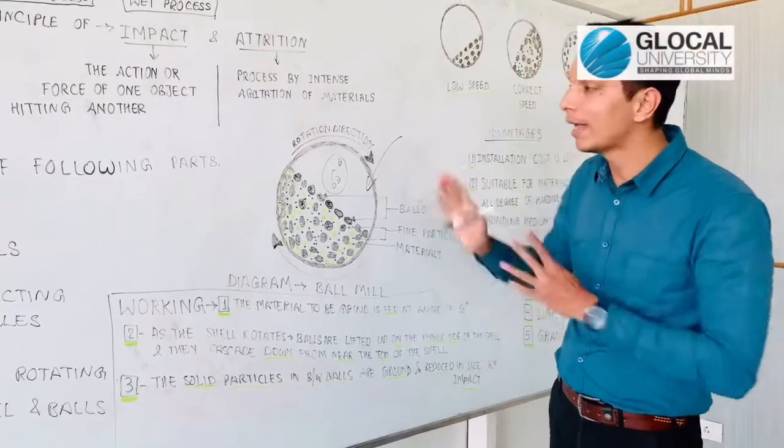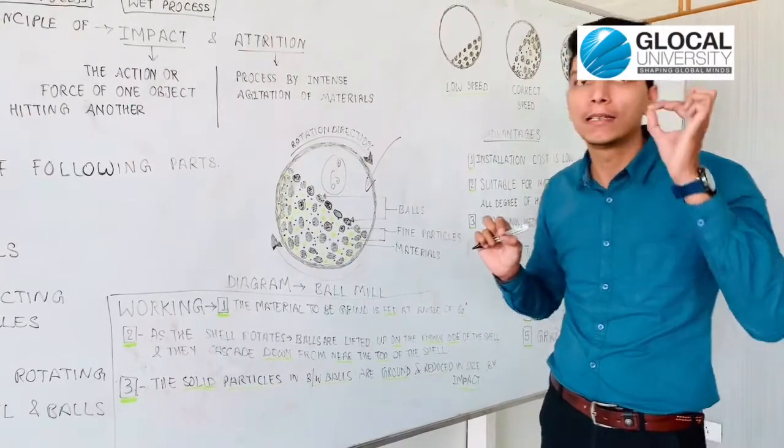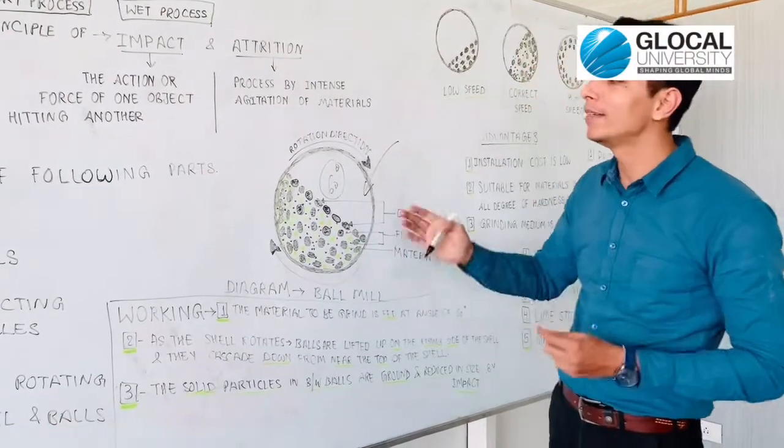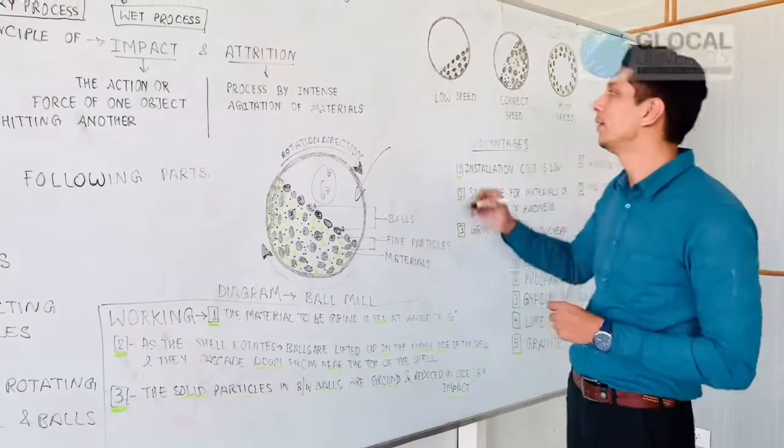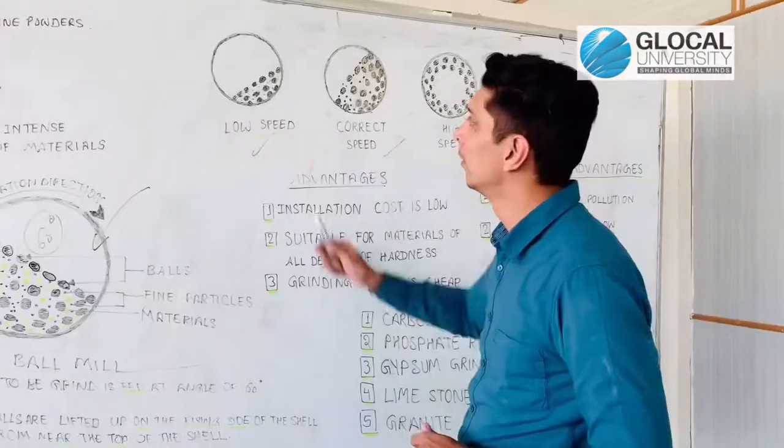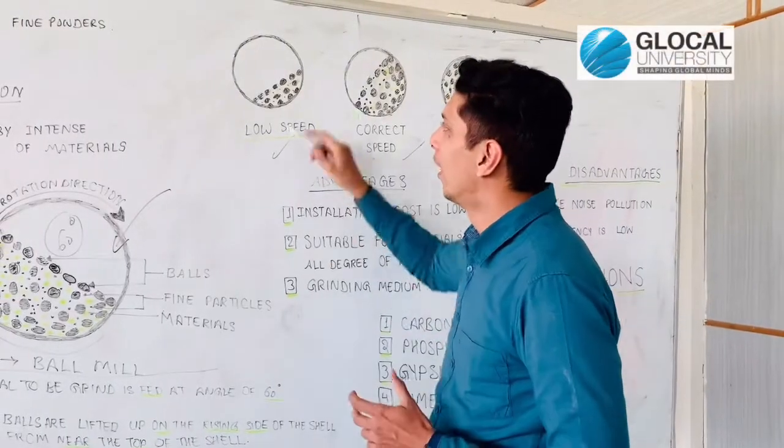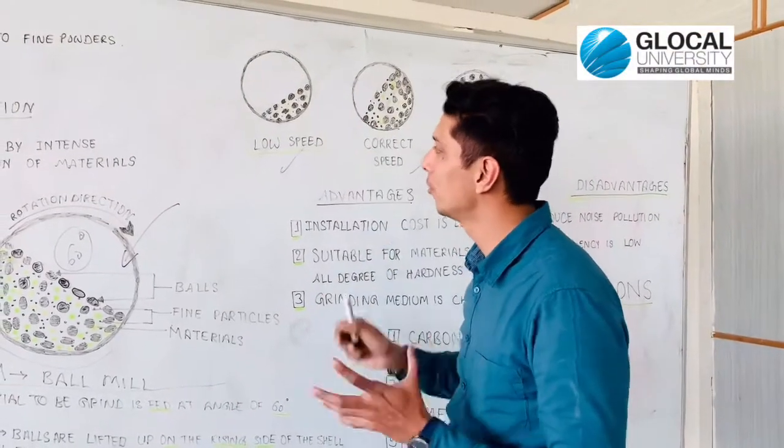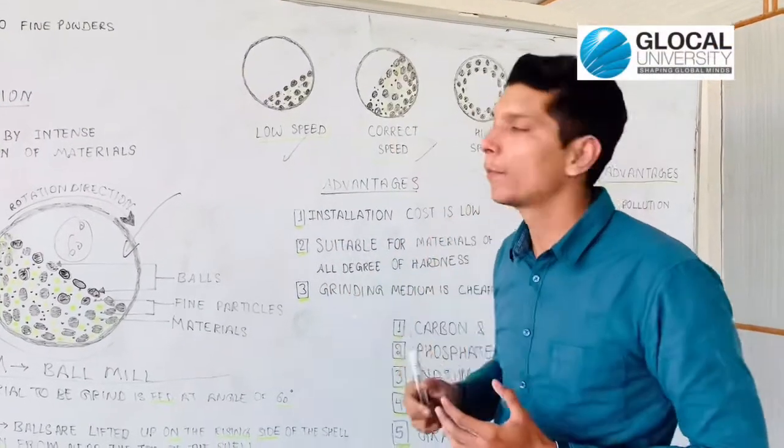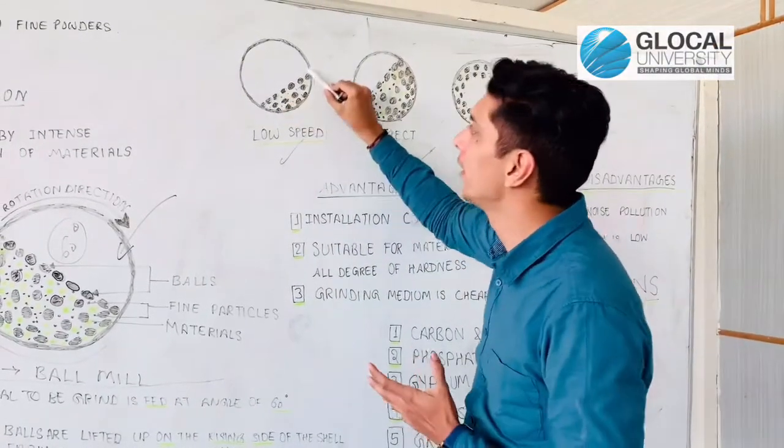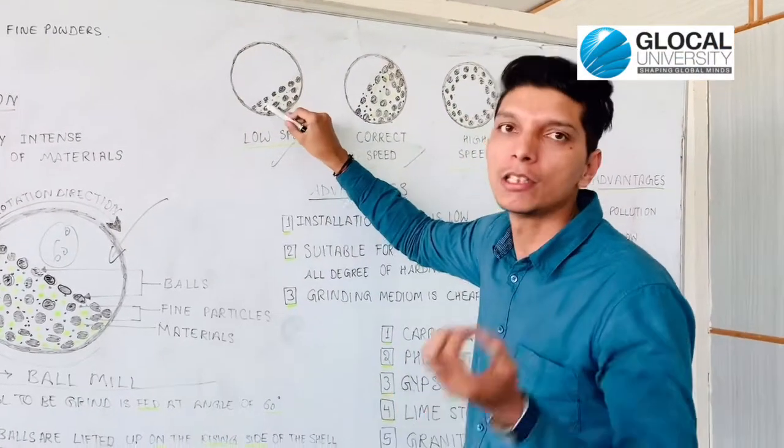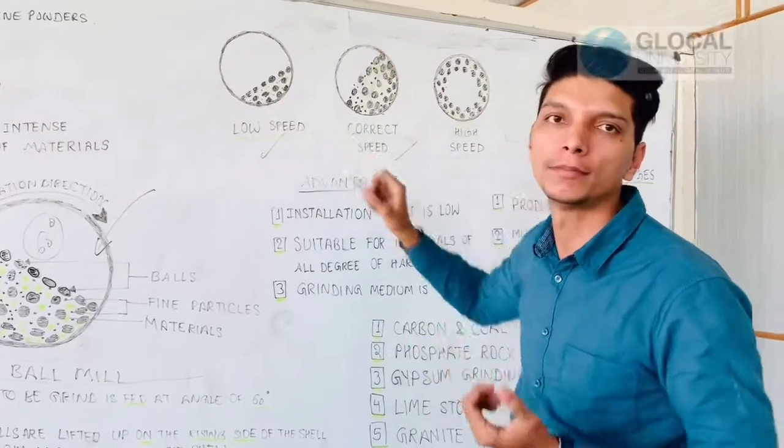For this angle, the important key role is speed - speed of balls or speed of the vessel. There are three types of speed: low speed, correct speed, and high speed. At low speed, about 20 or 30 RPM, the ball is not moving. If the ball is not moving, then size reduction will not happen.